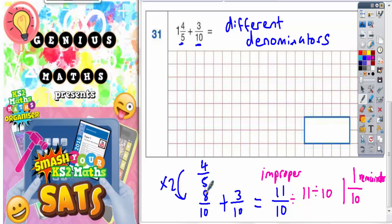So now we've added all of this together and we've got 1 and 1/10, we can go back to the question. This bit here is 1 and 1/10.